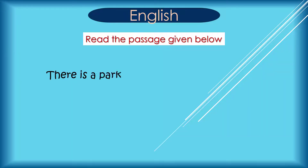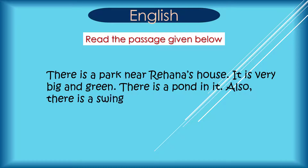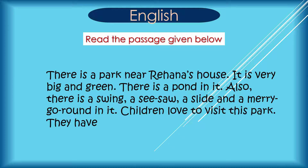Read the passage given below. There is a park near Rihanna's house. It is very big and green. There is a pond in it. Also, there is a swing, a seesaw, a slide and a merry-go-round in it. Children love to visit this park. They have a lot of fun here.